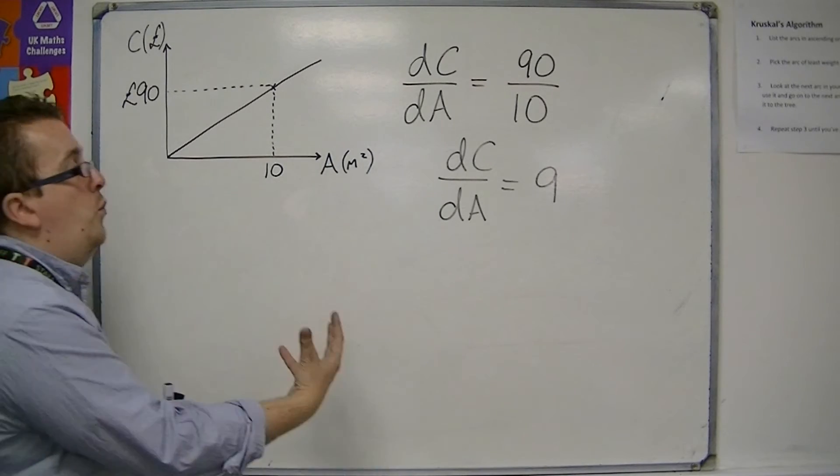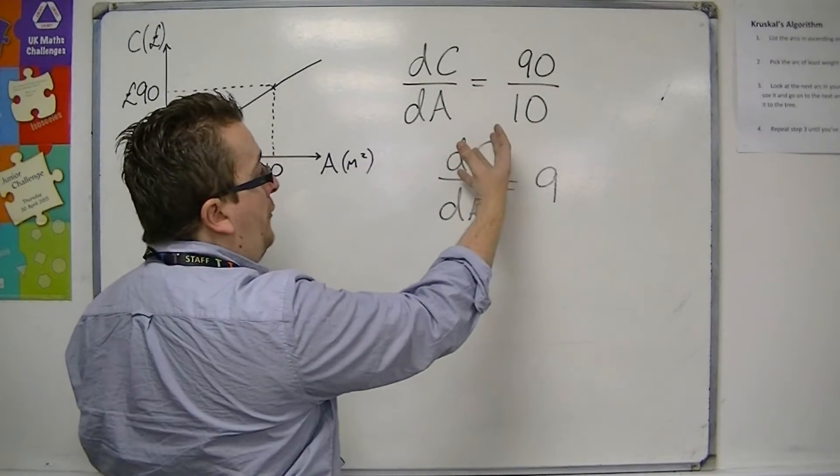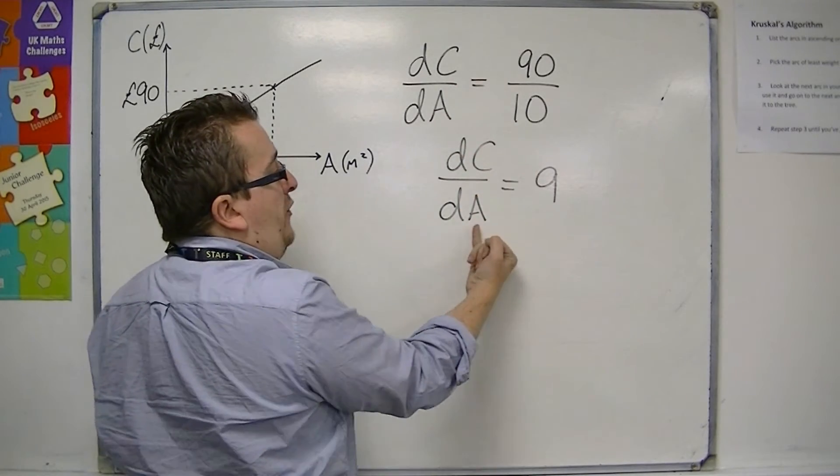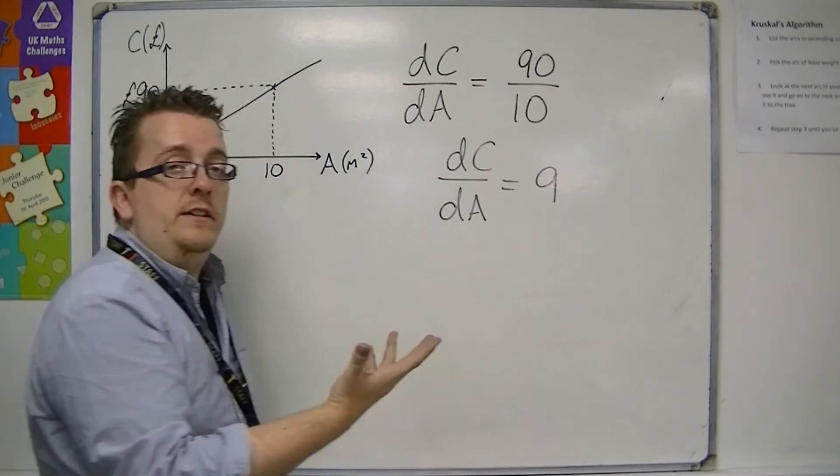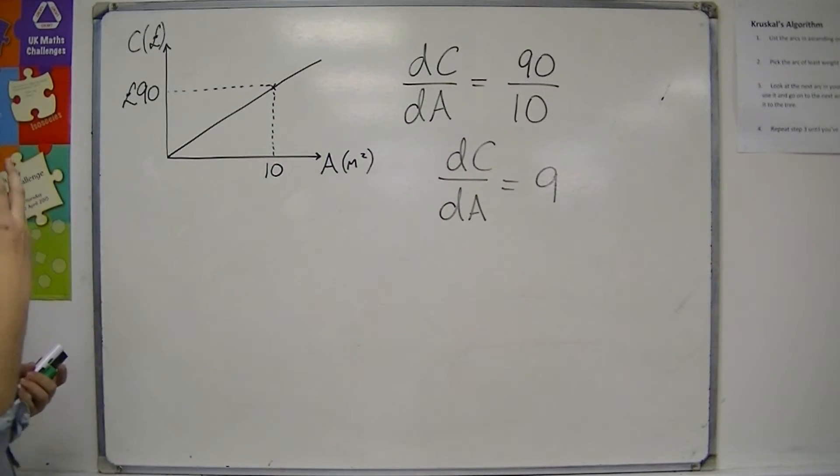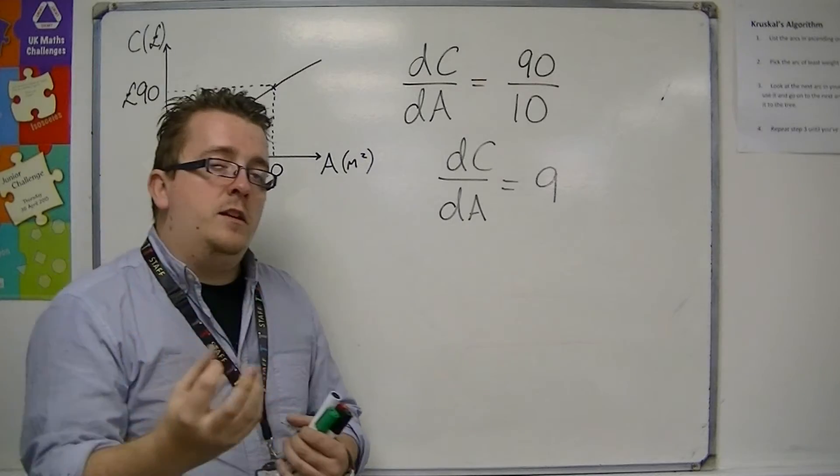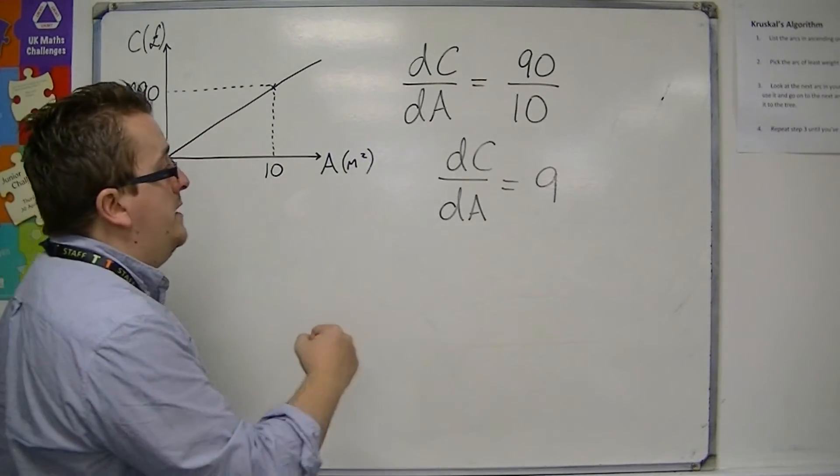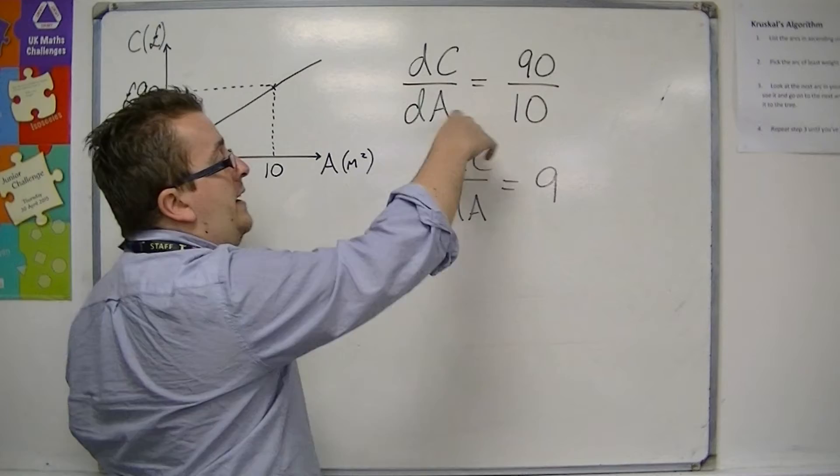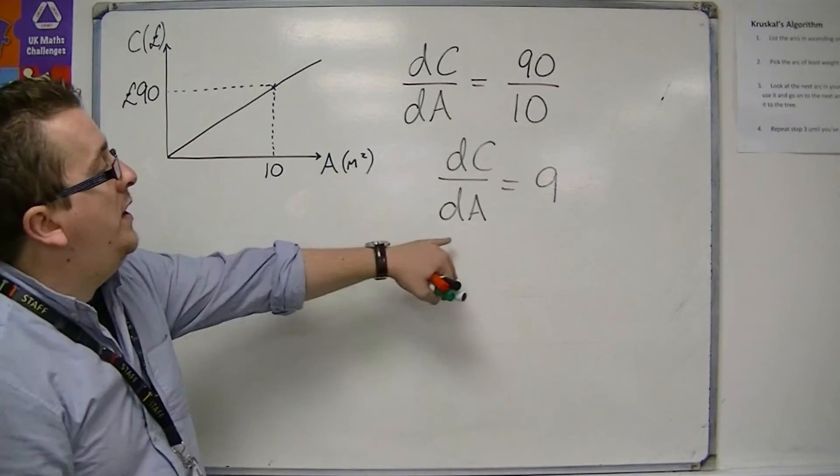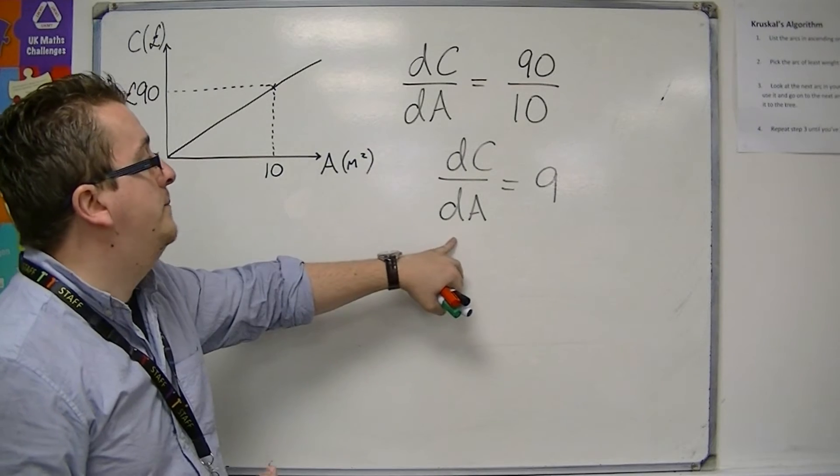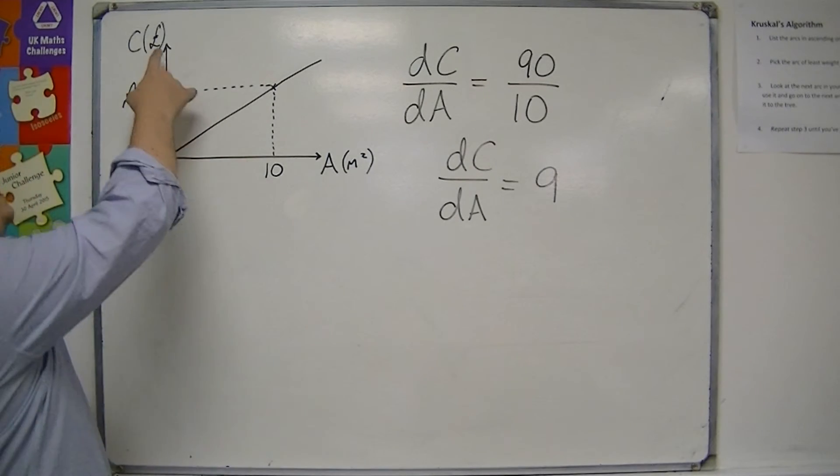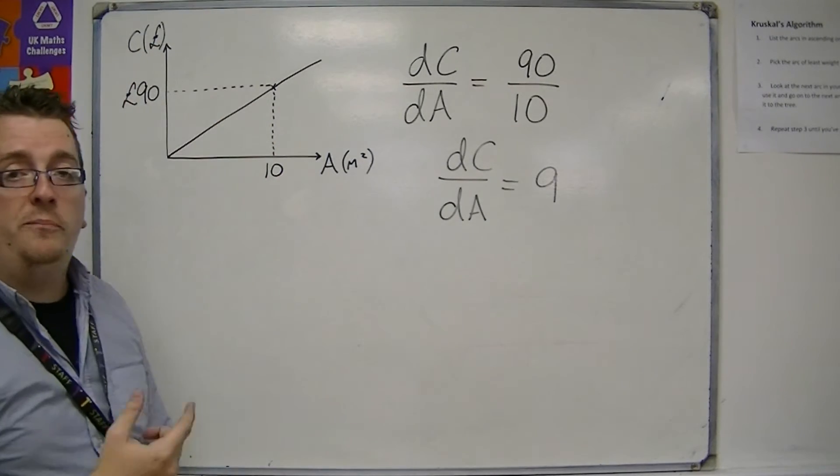The rate at which the cost changes with respect to the area of the house is 9. There is a genuine link between the gradient of a line and the rate at which it changes, and it is described using this operator, dc by dA, in this case, depending on how the axes have been labelled.